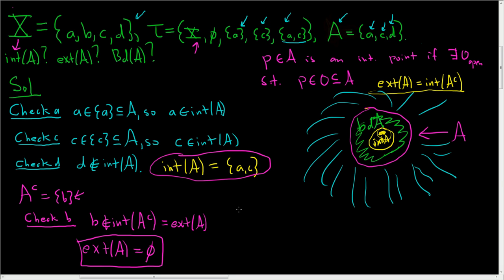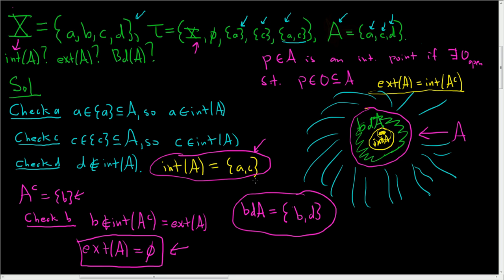Finally, we have to find the boundary of A — all the points that are neither in the interior nor the exterior. In the interior we have AC. In the exterior we have the empty set. Everything in X is ABCD; we remove AC and nothing from the exterior, so it's just going to be BD. So the boundary of A is {B, D} — it's everything that's in neither of these sets.